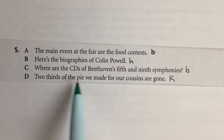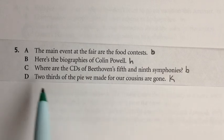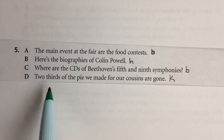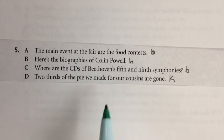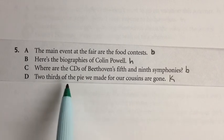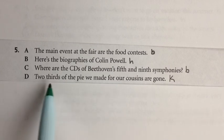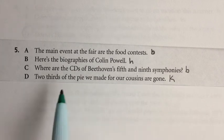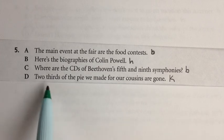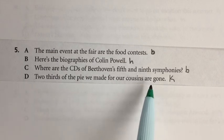Sentence D: 'Two-thirds of the pie we made for our cousins are gone.' This is wrong because 'two-thirds' is an expression of amount, which is either singular or plural depending on what you're talking about. Pie is singular, so two-thirds of a singular quantity is singular. This should say 'is gone' because pie is singular — the two-thirds we're talking about is a singular quantity, and singular verbs end in S.